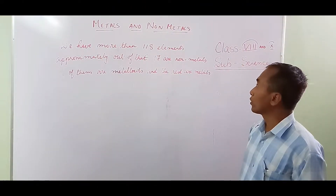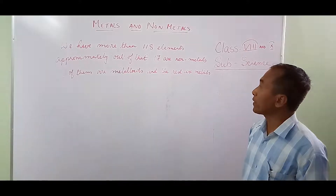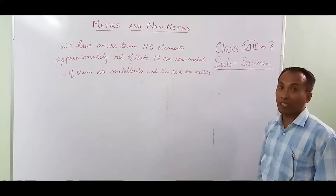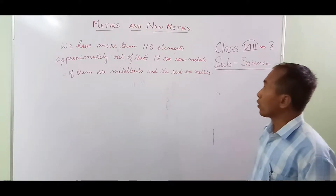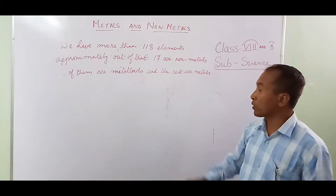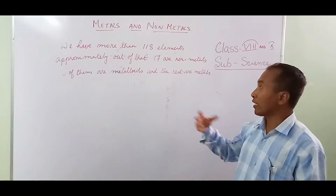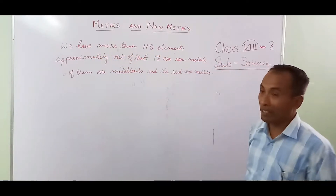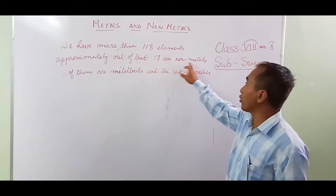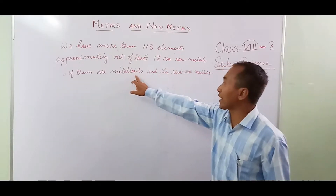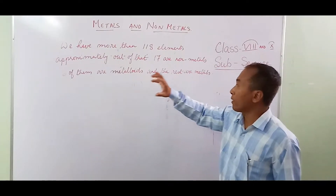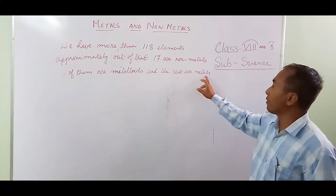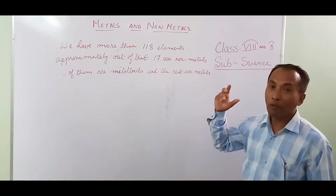For class 8 and class 10, today we are going to begin the fourth chapter of class 8 — Metals and Non-Metals — and it is the third chapter in chemistry of class 10. Before we begin, let's review some general knowledge. We have more than 118 elements approximately; out of them, 17 are non-metals, six are metalloids — meaning elements that possess both the characters of metals as well as non-metals — and the rest are metals.